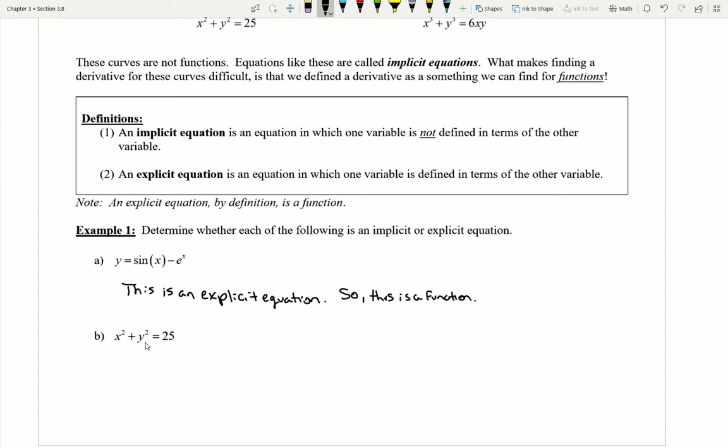On this one I notice that in its current form I have x squared plus y squared equals 25. I don't have one variable being set equal to a bunch of stuff with the other variable. I would have to state that this is an implicit equation since y is not solved in terms of x.